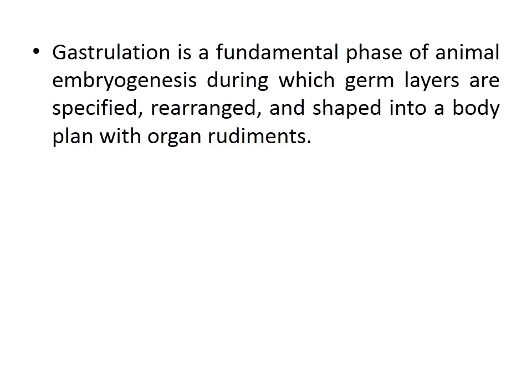Gastrulation is a fundamental phase of animal embryogenesis during which germ layers are specified, rearranged, and shaped into a body plan with organ rudiments. After the formation of the blastula by blastulation, the blastoderms rearrange into a gastrula, and this process is known as gastrulation.